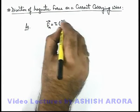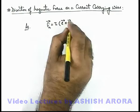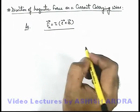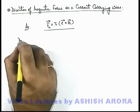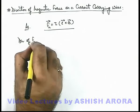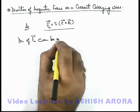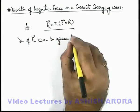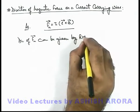i L cross B. So from this expression we can say that direction of F_m vector can be given by right hand thumb rule.